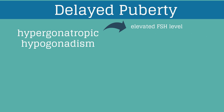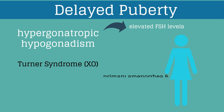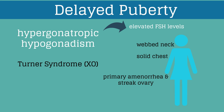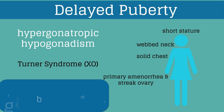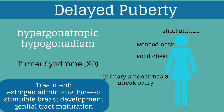With hypergonadotropic etiologies, there will be an elevated FSH level because the HPO axis is activated. The most common cause is Turner's syndrome — an abnormality in or absence of one X chromosome. Patients with Turner's syndrome can present with primary amenorrhea and streak ovaries, often with associated short stature, webbed neck, and a shield chest. Treatment involves administration of estrogen to stimulate breast development and genital tract maturation.